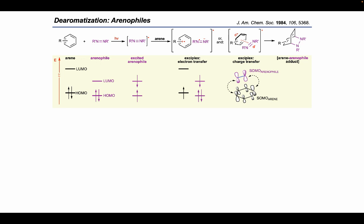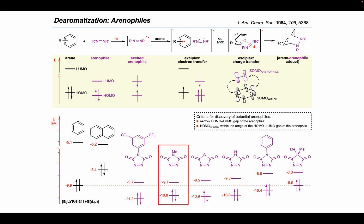In order to overcome these obstacles, we turned to compounds we now dub arenophiles, as they are capable of undergoing excitation under visible light and in the presence of an appropriate arene system to generate either an exciplex electron transfer or charge transfer complex, which ultimately leads to a formal 4+2 cyclohexatriene product. In searching for a suitable arenophile, it was important to recognize a narrow HOMO-LUMO gap of the arenophile, as well as maintaining the HOMO of the arene within the range of the HOMO-LUMO gap of the arenophile. Performing DFT calculations, the most suitable candidates were revealed, with MTAD — short for 4-methyl-1,2,4-triazoline-3,5-dione — being optimal based on synthetic accessibility.